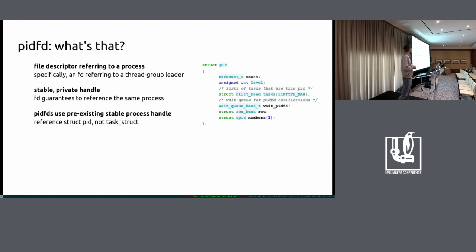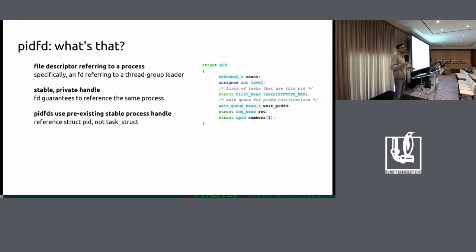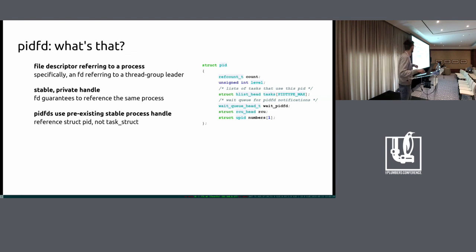It abuses something in the kernel that has existed for a long time, which is the kernel's version of a stable handle on a process - which is struct pid. We use struct pid, not task_struct. For the kernel, a thread - a task - is identified by a task_struct. We could have made a PIDFD refer to a task_struct. Why didn't we do this?